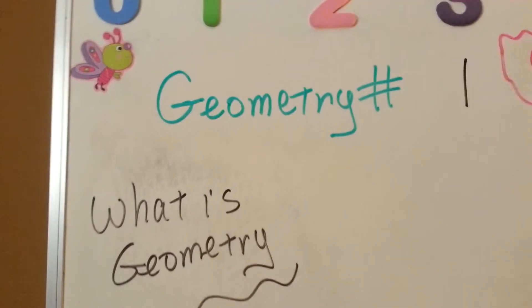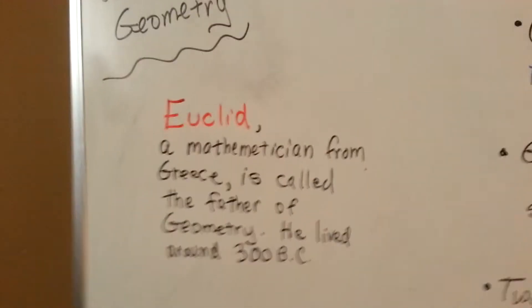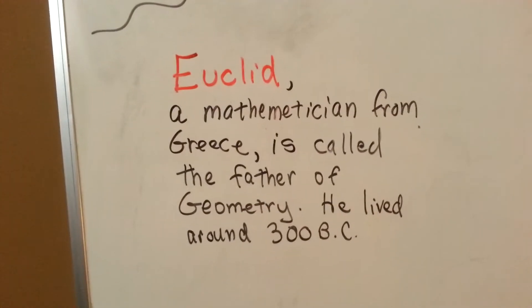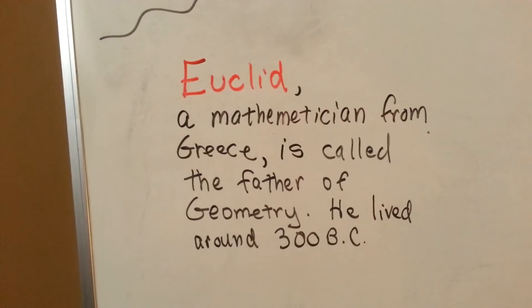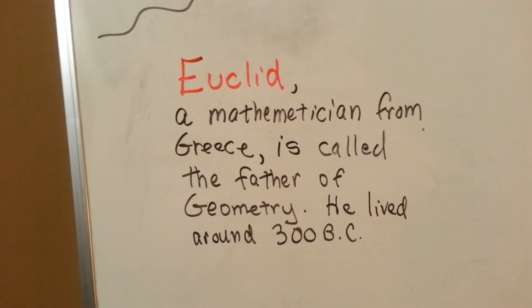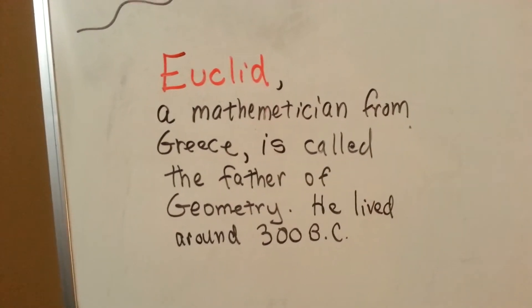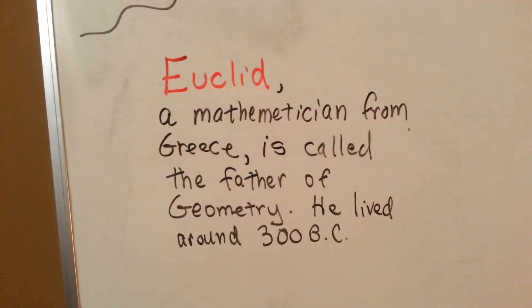What is geometry? Well, a long time ago, around 300 BC, a man named Euclid, a mathematician from Greece called the father of geometry, wrote a lot of books about this form of mathematics.